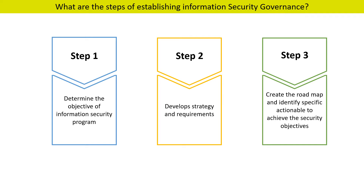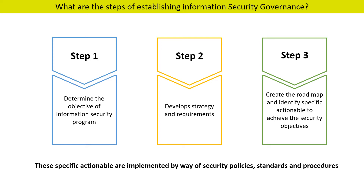Let us take one example. The objective of a bank may be to keep the system available all the time for their customers — that is, zero downtime. On the basis of their objective, they need to develop strategy and requirements: what are the requirements to ensure that the system is available at all times? Once these requirements are listed down, step three is to create the actual actionables to achieve the security objectives. These specific actionables are implemented by way of security policies, standards and procedures.